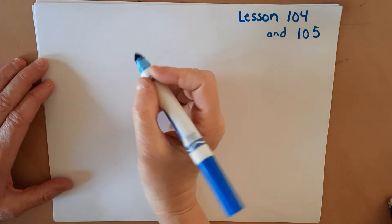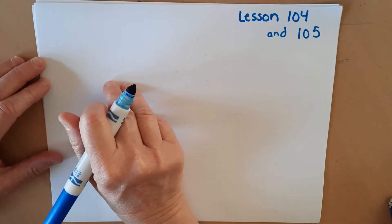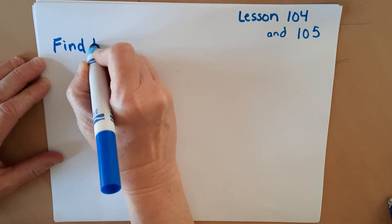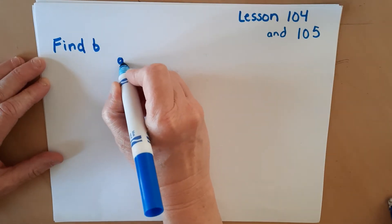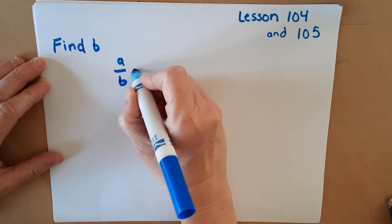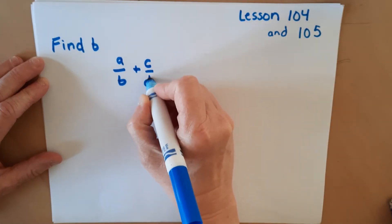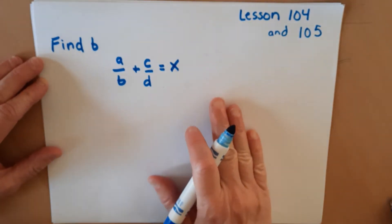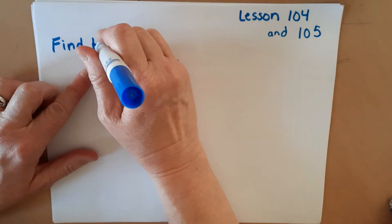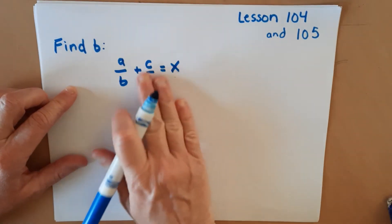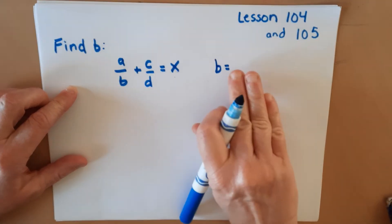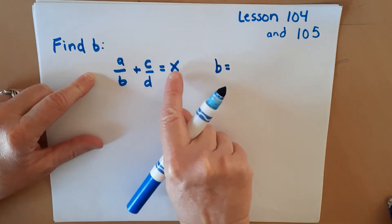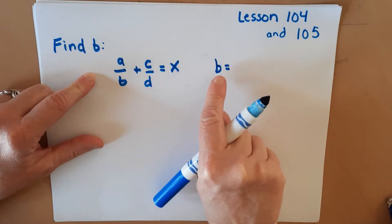Since we did this one in class, I'm going to do a different one. For example, your problem will look something like this: Find B in the equation A over B plus C over D equals X. When it says to find B, we're looking to rearrange this equation so that we have B equals everything else. All the other variables — A, C, D, and X — will be on one side, and only B will be isolated.